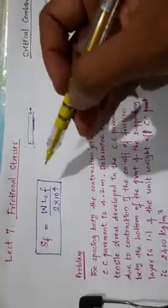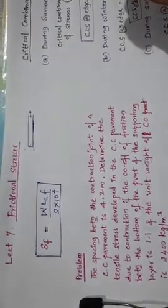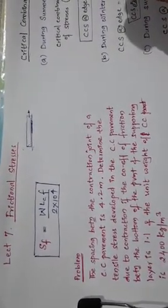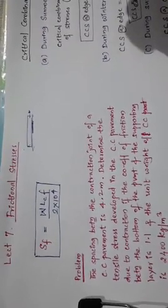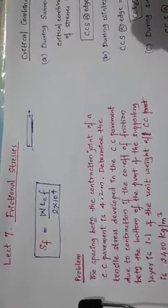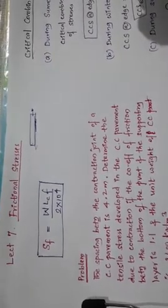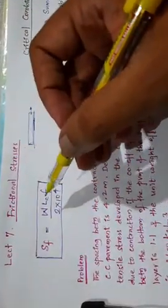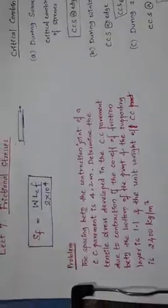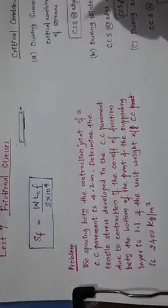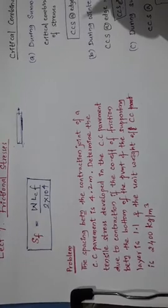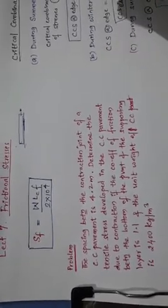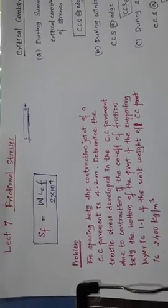The total force in kg developed in the cross section of the concrete pavement is due to the movement of half the length of the slab and the frictional resistance at the interface over the half slab length. The formula is: sf = (W × Lc × f) / (2 × 10⁴), where sf is the stress developed due to interface friction in the cement concrete pavement per unit area, expressed in kg/cm² or N/mm².